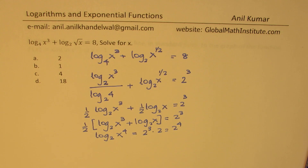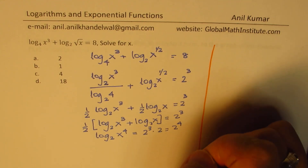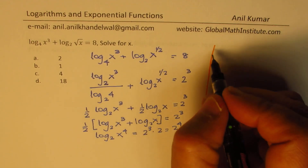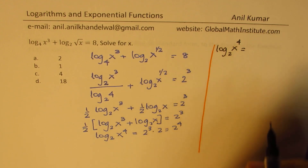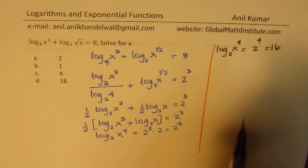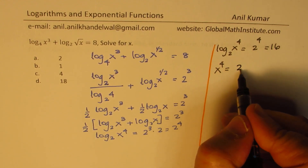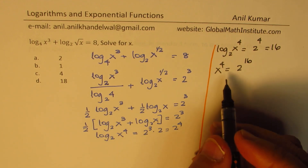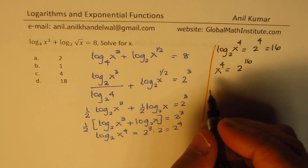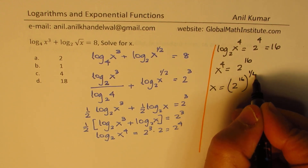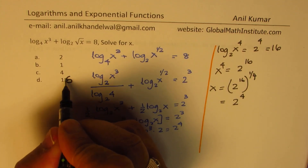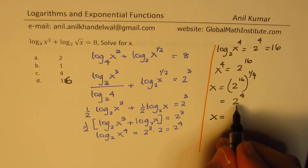Now we have log to the base 2, so we can write this in exponential form. We have log to the base 2 of x to the power of 4 equals 2 to the power of 4, which is 16. Therefore, x to the power of 4 equals 2 to the power of 16. So x is the fourth root of 2 to the power of 16, which gives x equals 2 to the power of 16 times one-quarter, that is 2 to the power of 4, which is 16. Note there was a typing error in the intermediate step — it should have been 16.